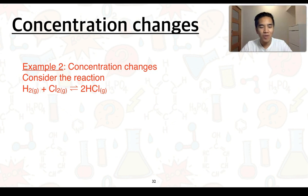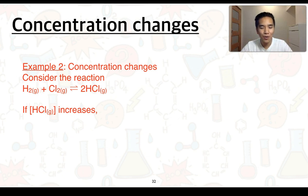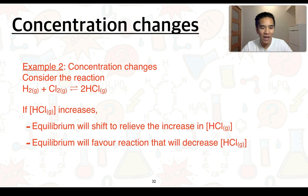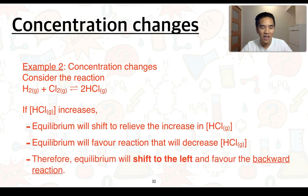For our second example, we're going to consider the same reaction but a different change. In this case, we're going to look at an increase in the concentration of HCl. This increase is going to cause the stress on the system at equilibrium. The equilibrium will want to shift to relieve this increase, so it will favour the reaction that will act to decrease it. From our equation here, we can see that will favour the backward reaction — so the equilibrium will shift to the left.